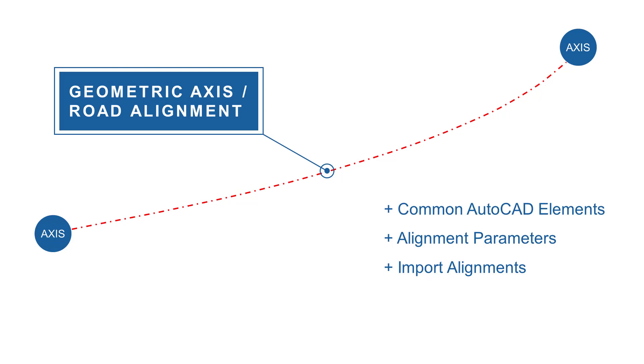This can be done in the graphical alignment editor. But it is also possible to transfer common AutoCAD elements such as lines, polylines and splines to an axis or even importing alignments from other projects.